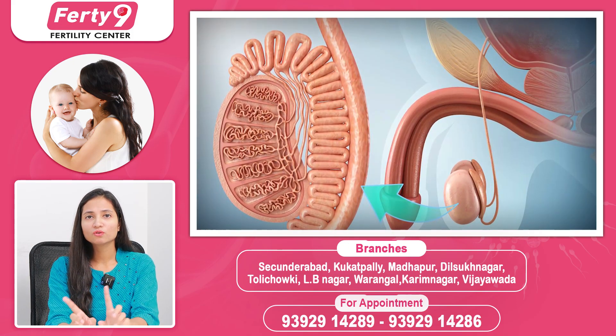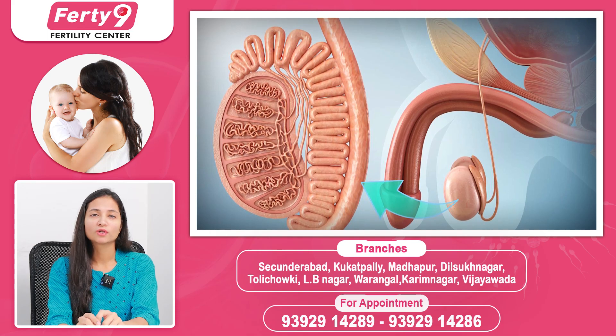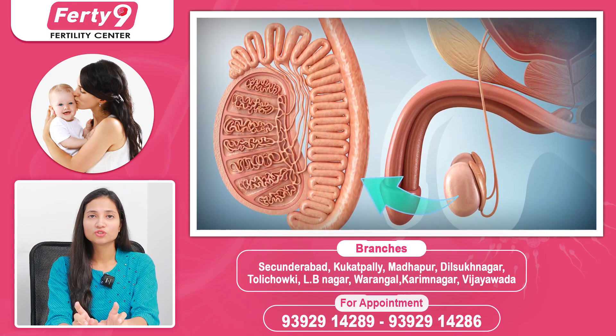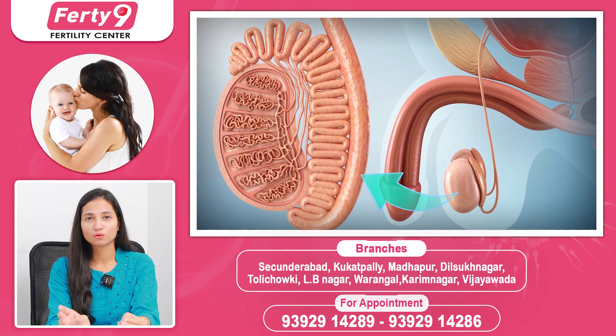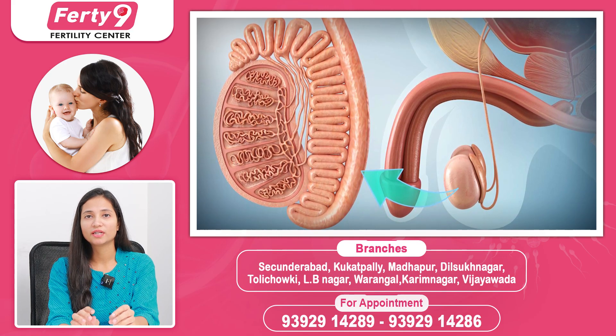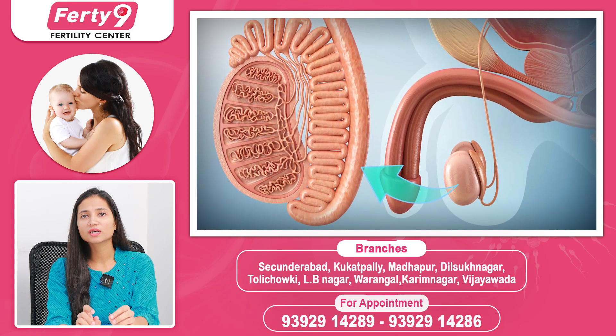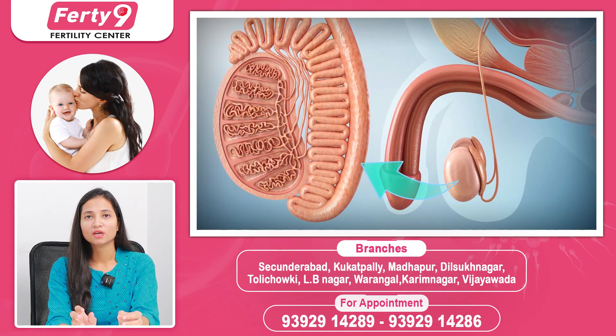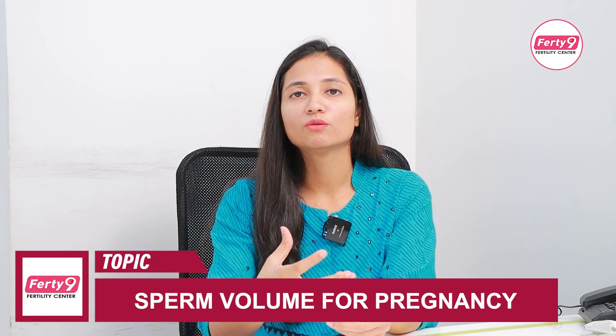The volume of the sample originates from the reproductive system. There are two testes, ducts running along them, and accessory glands. Sperms make up a small part; the liquid portion comes from these accessory glands. If the ducts get blocked — for example, due to infection — then the final volume of the sample is reduced.